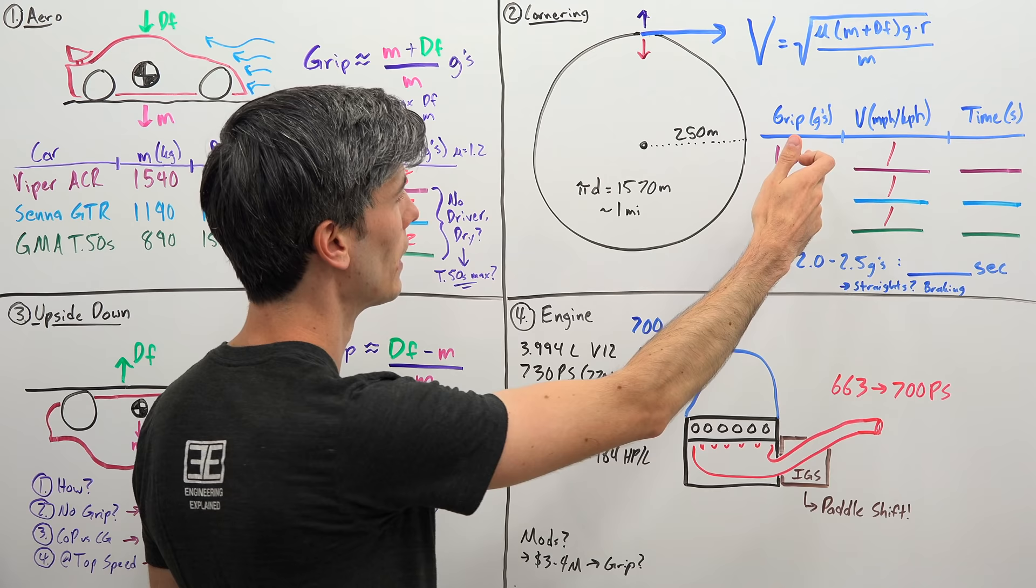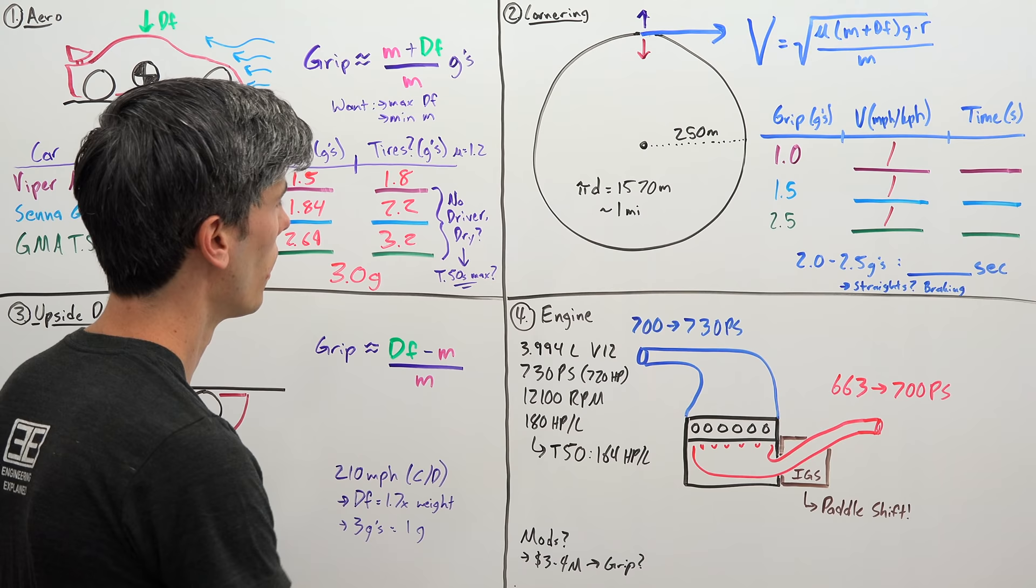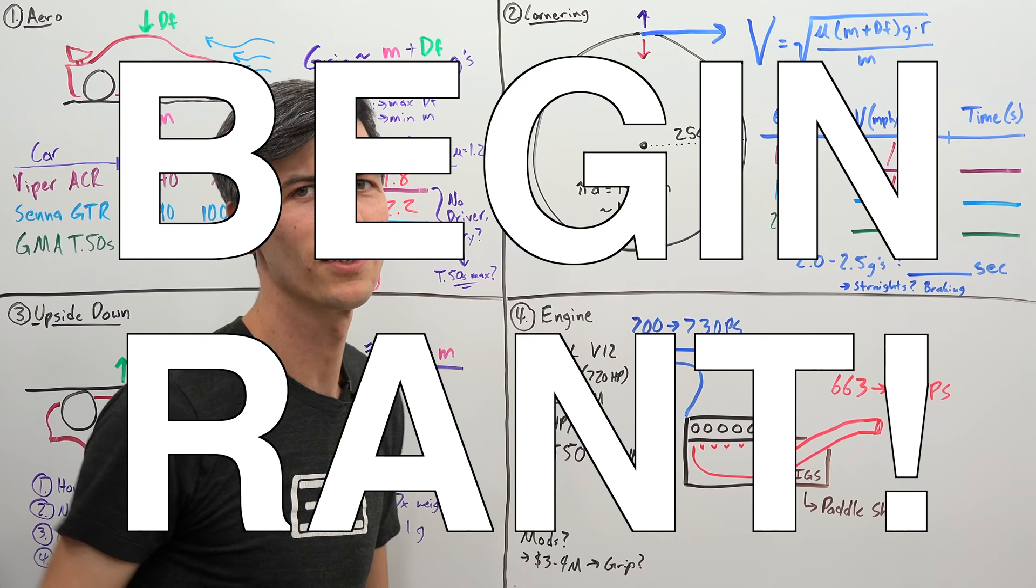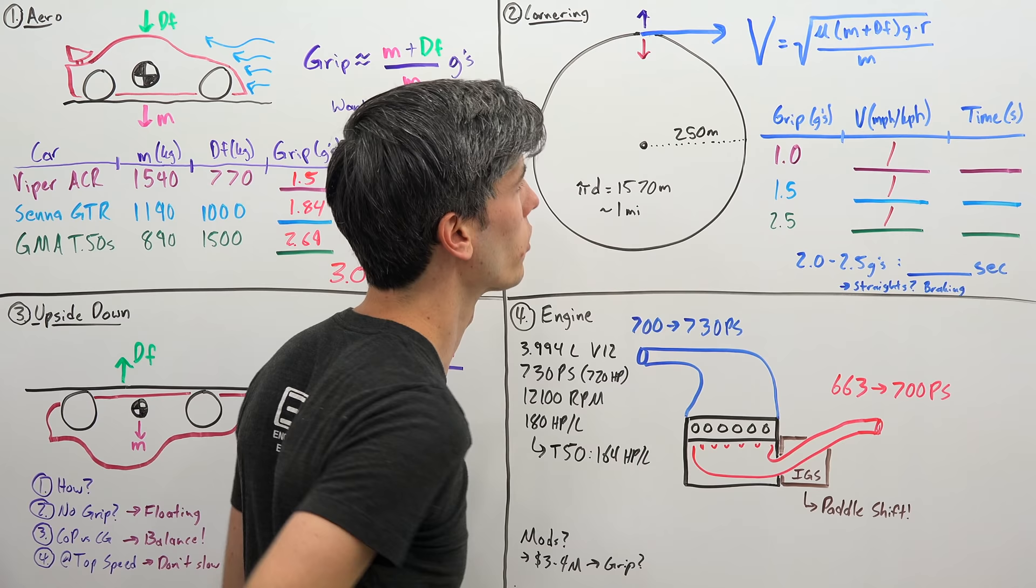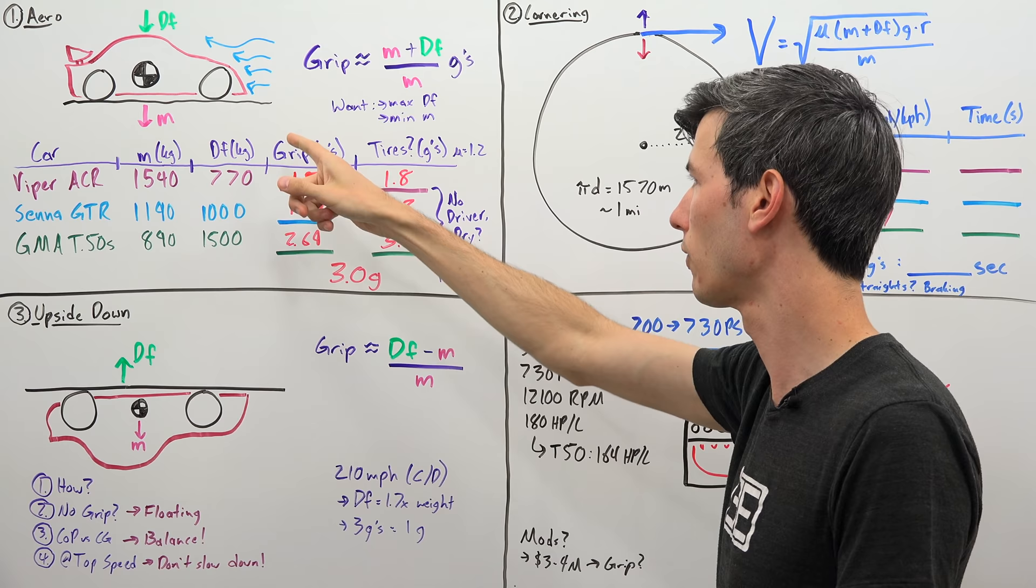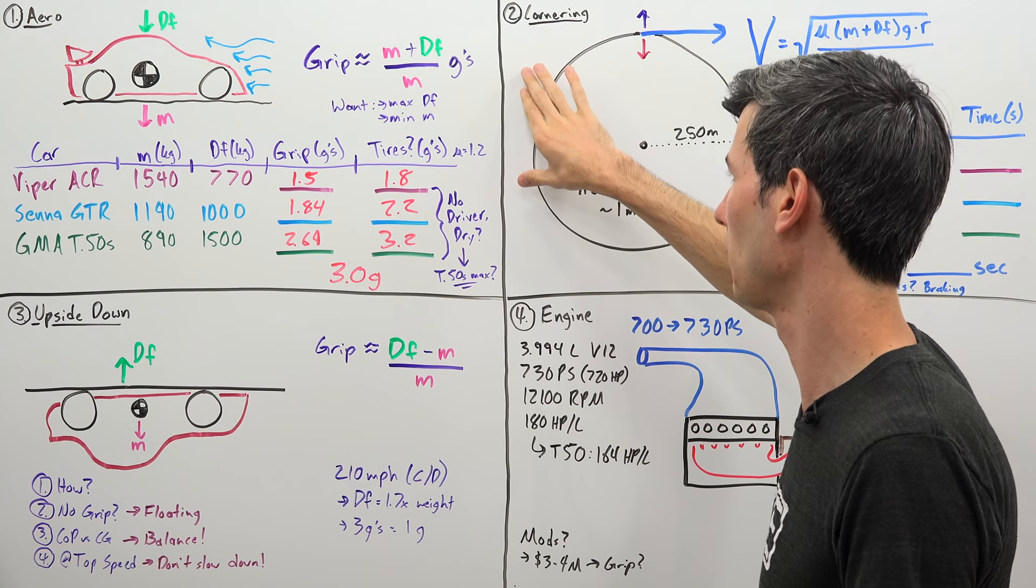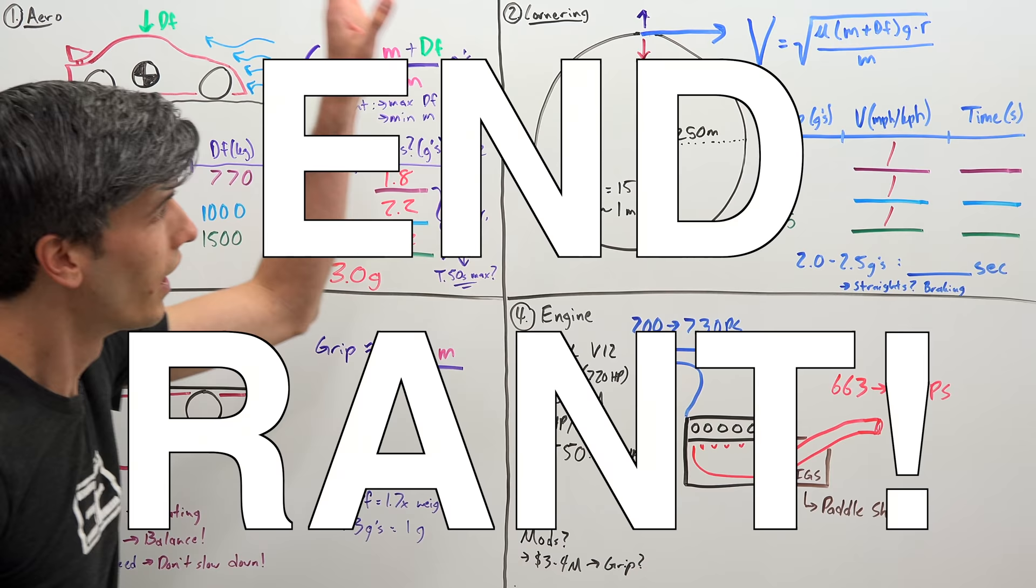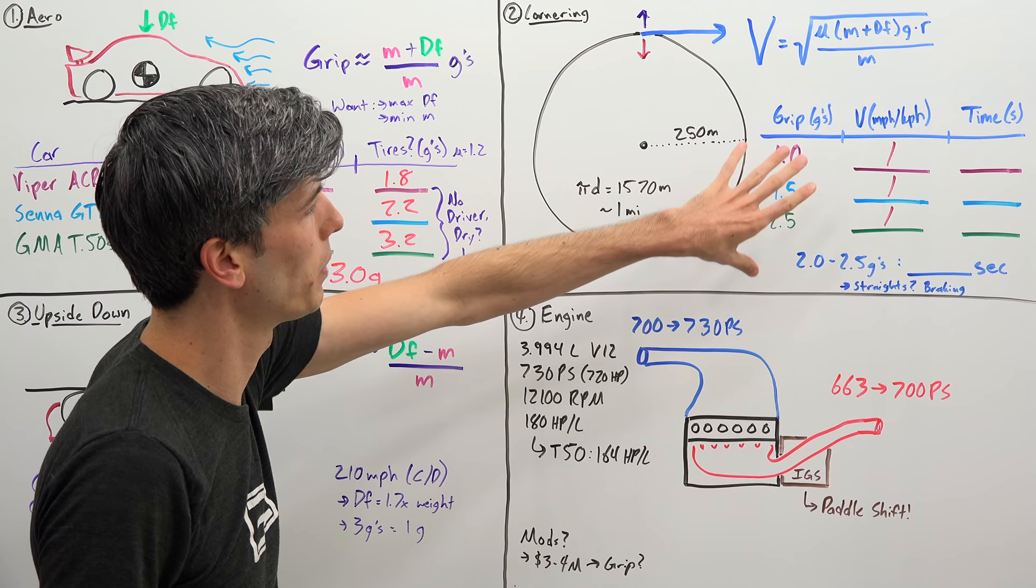If you set these two forces equal to each other, you can find out the maximum velocity that you go around this circle. We're looking at different levels of grip from a basic road car with about 1 G of lateral grip all the way to perhaps our Gordon Murray T50s with 2.5 G's of grip. One thing to note which you might question: why are we multiplying downforce by gravity? Because certainly downforce isn't a mass, but yet here's kind of a flaw with the metric discussion of downforce in kilograms.